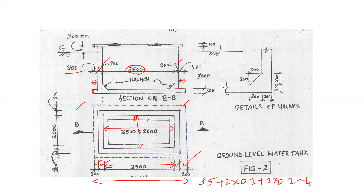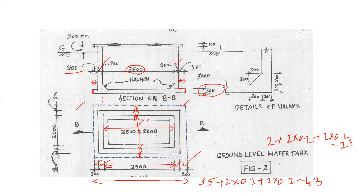Let's add another dimension. The breadth is 2 meters with a 0.2 thickness, giving 2.8 meters. Length and breadth are multiplied by the thickness of the floor slab, which is 0.3 meters thickness. Then you can add to the floor slab calculation.